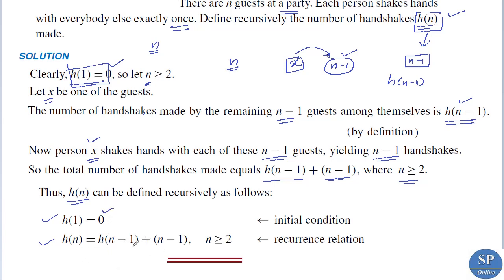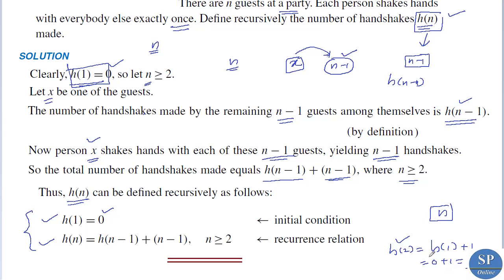Using this recursive formula, h(2) = h(1) + (2-1) = 0 + 1 = 1. And h(3) = h(2) + (3-1) = 1 + 2 = 3. So with 2 guests there is 1 handshake, and with 3 guests there are 3 handshakes total.